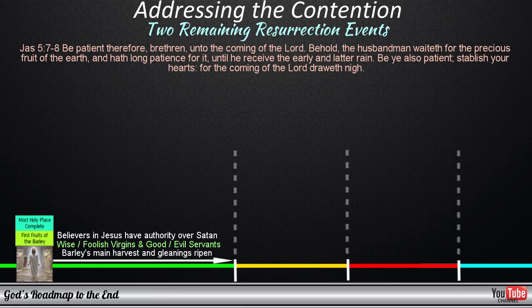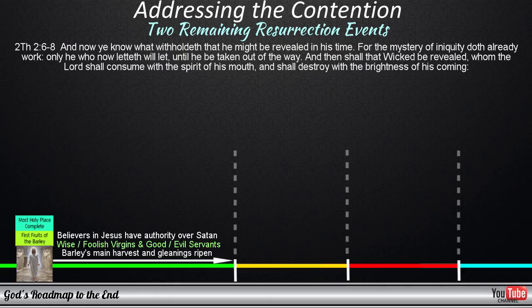In 2 Thessalonians chapter 2, we see Paul mentioning the Restrainer, and how the Restrainer relates to the Antichrist, also known as the Son of Perdition, or the Wicked. And now ye know what withholdeth, that he might be revealed in his time. For the mystery of iniquity doth already work, only he who now letteth will let, until he be taken out of the way. And then shall that wicked be revealed, whom the Lord shall consume with the spirit of his mouth, and shall destroy with the brightness of his coming.